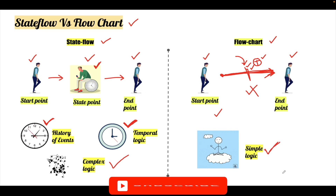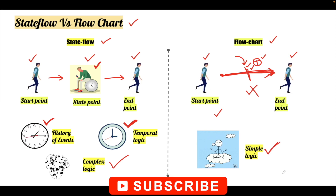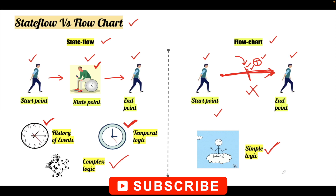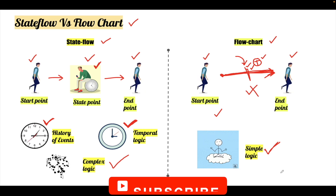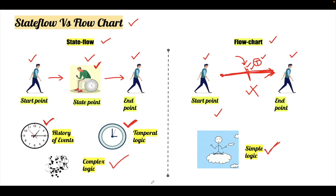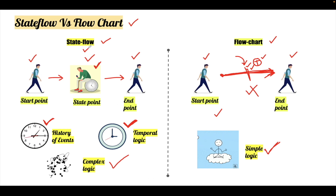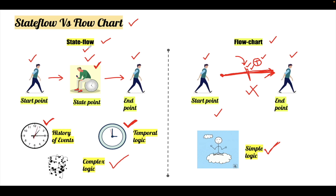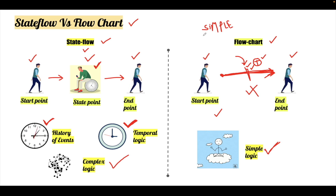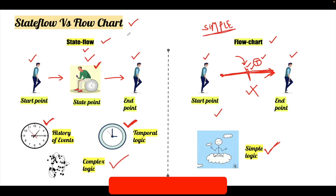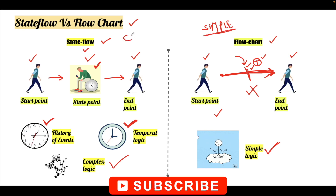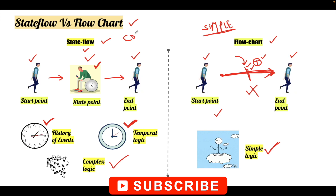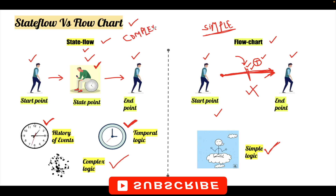Using a flow chart for simple logic will make the program simpler and it will occupy less memory when developing the code, because individual states in Stateflow also acquire some memory when generating C code. So for simple logic use a flow chart, and for complex logic use Stateflow.